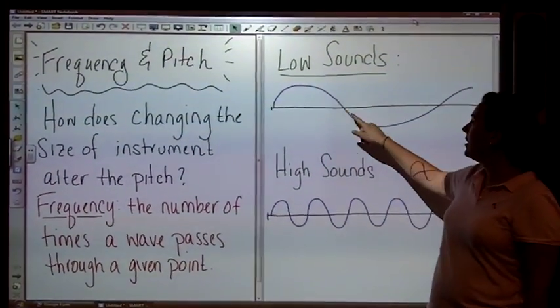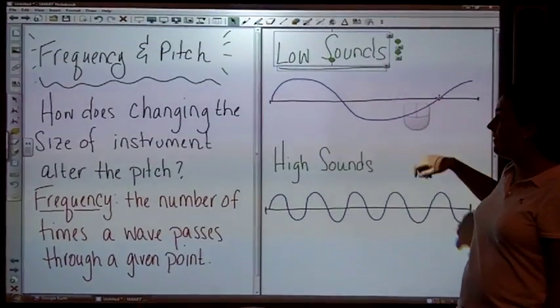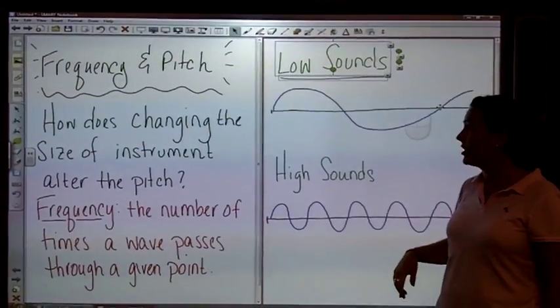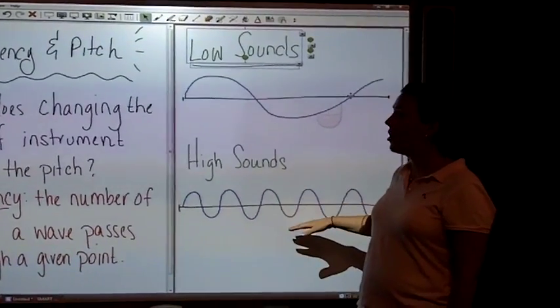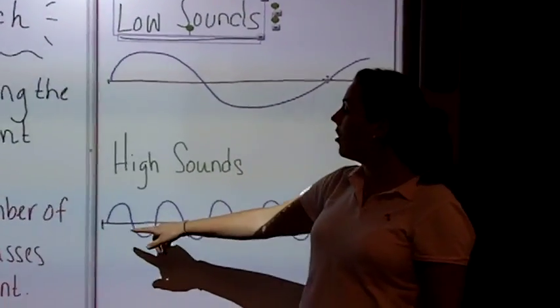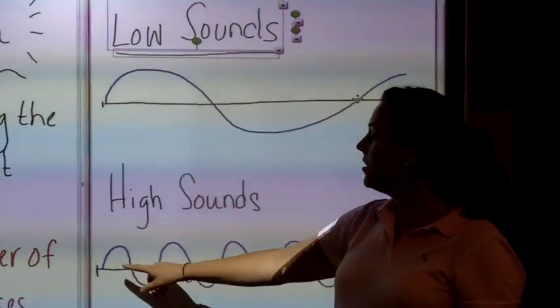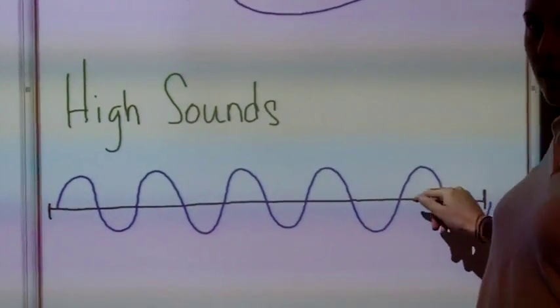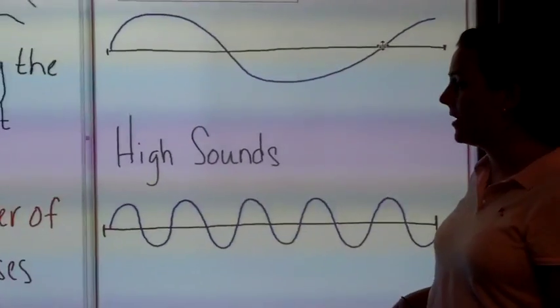So my frequency here is just over one wavelength. If I look down at a high sound or a high pitch, my frequency is noticeably higher because I have so many more wavelengths. So I have one, two, three, four, five wavelengths there, so that must be a higher pitch.